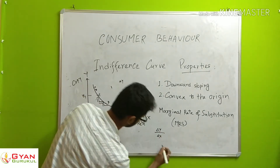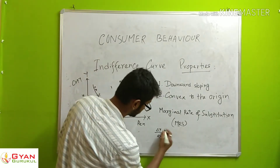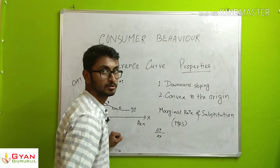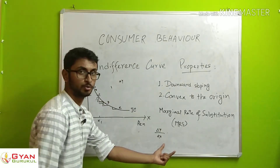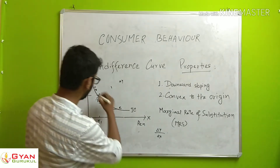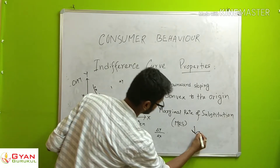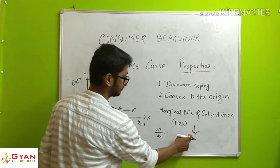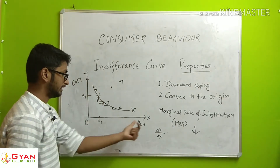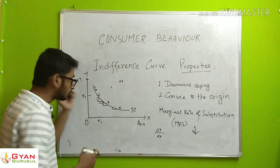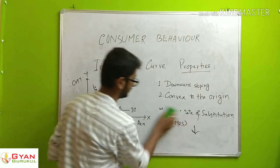Change in Y by change in X — the MRS value. The denominator increases, so the ratio — MRS of XY — is decreasing. The MRS is decreasing, which is why the indifference curve is convex to the origin.